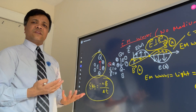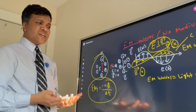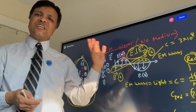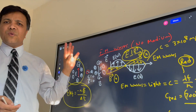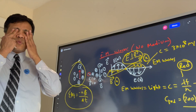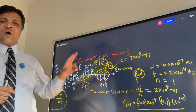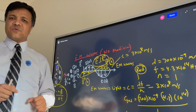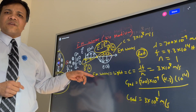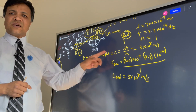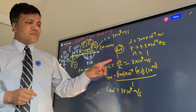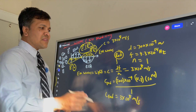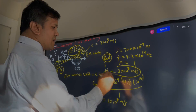So the electric field creates the magnetic field, which in turn creates the electric field — they oscillate and need no medium to move. We humans perceive this as light, called C, with a value of 3 × 10⁸ meters per second. If lambda increases, then frequency must decrease to keep the speed of light constant.